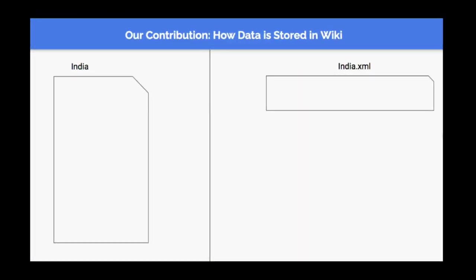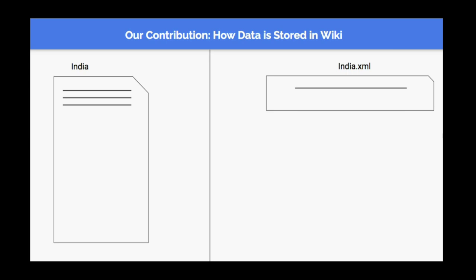More precisely, suppose on the left side we have the India article — the current snapshot that we can see. On the right side, we have the backend data, which is the revision history being stored for the India article. Suppose a user comes and writes three lines in the India article and saves it. What will happen in the backend is that these three lines will get recorded as revision number one.